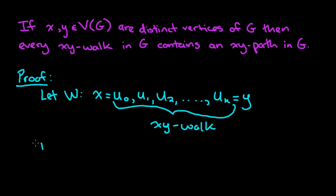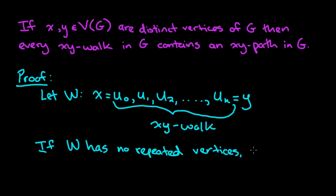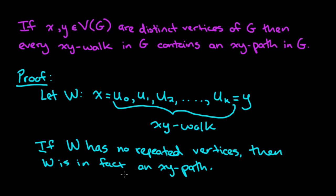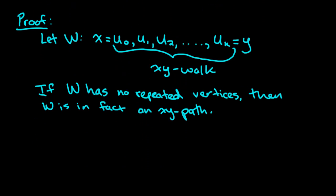Now it's important to observe that if this walk W has no repeated vertices, then W is in fact an XY path. If you have no repeated vertices, then you must also have no repeated edges — if you repeated an edge, you would have had to repeat a vertex too. So if W has no repeated vertices, we're already done because we have an XY path.